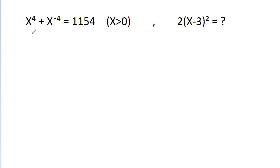In this video, we have given that x to the power 4 minus x to the power minus 4 is equal to 1154, where x is greater than 0. We have to find the value of 2 times x minus 3 whole square.